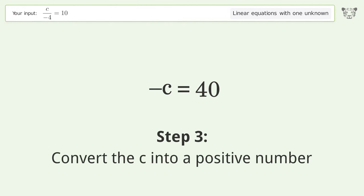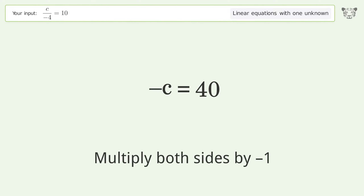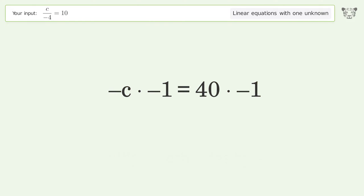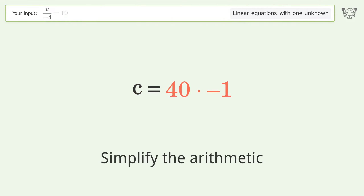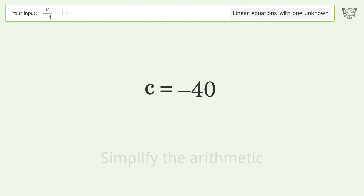Convert the c into a positive number by multiplying both sides by negative one. Remove the ones, simplify the arithmetic, and so the final result is c equals negative 40.